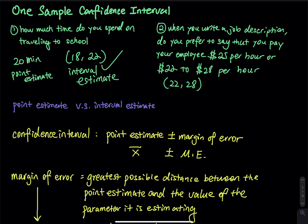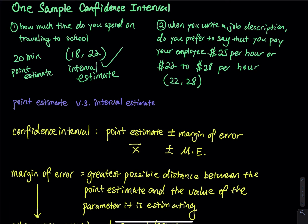So what about in confidence interval — point estimate versus interval estimate? A point estimate in confidence interval is one number, and interval estimate is a range of values. If I ask you, on average, how much time do you spend to study for a final, you can say for point estimate: I spent eight hours to study for the final. So that means for point estimate, you are using one number to estimate another number. So point estimate is you using one number to estimate another number.